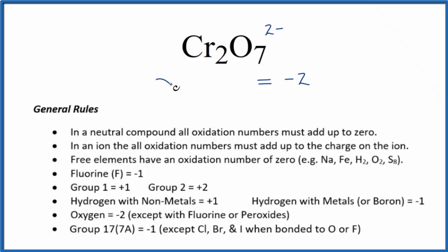Chromium, we don't know, we're going to call that x, but we have 2 chromiums. And then oxygen, that's always going to be minus 2, with a few exceptions. So we'll have minus 2, and we have 7 oxygens.